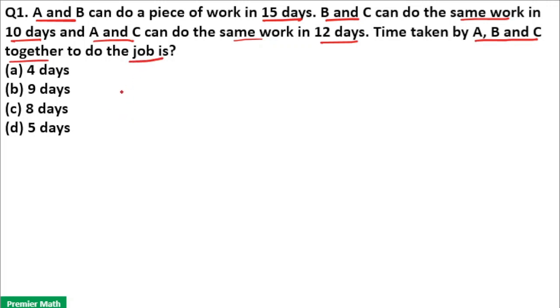Here A and B can complete a work in 15 days and B and C can complete the same work in 10 days and A and C can complete the same work in 12 days. Now A and B, B and C, A and C all are doing the same job.